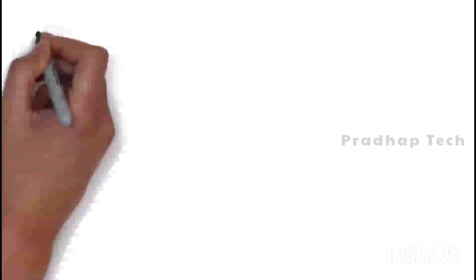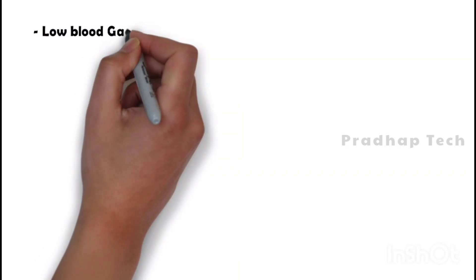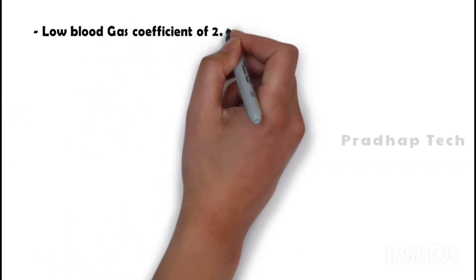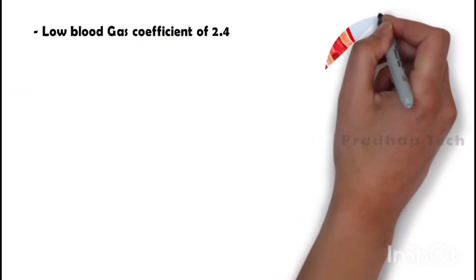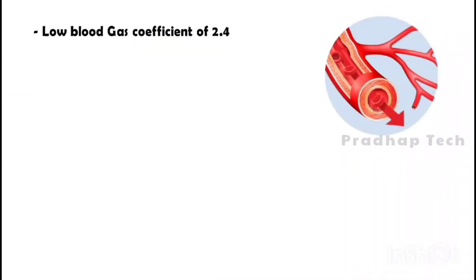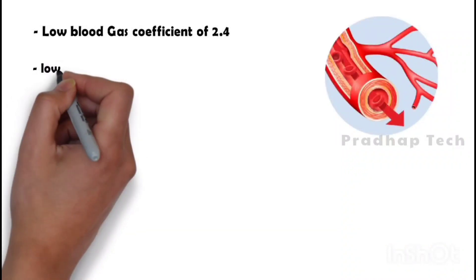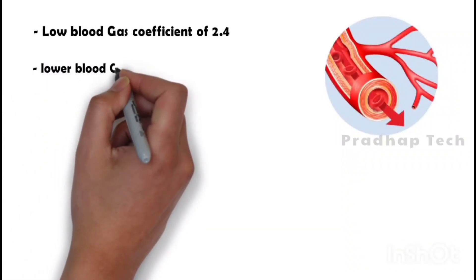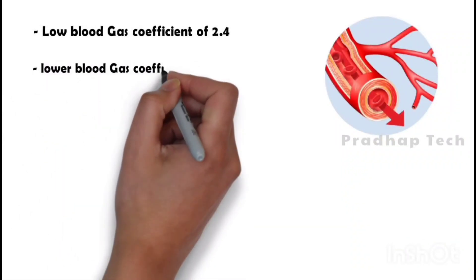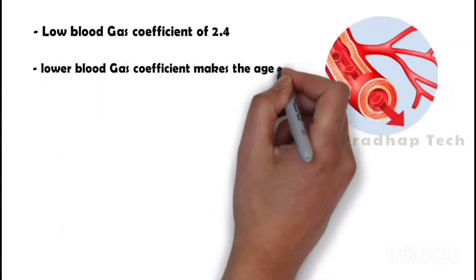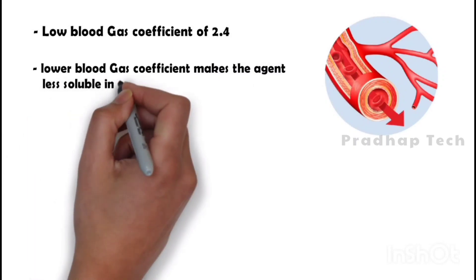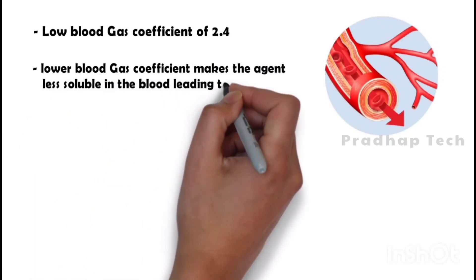It has a low blood gas coefficient of 2.4. The blood gas coefficient is the solubility of the agent in the blood. A lower blood gas coefficient makes the agent less soluble in the blood, leading to faster induction and recovery.